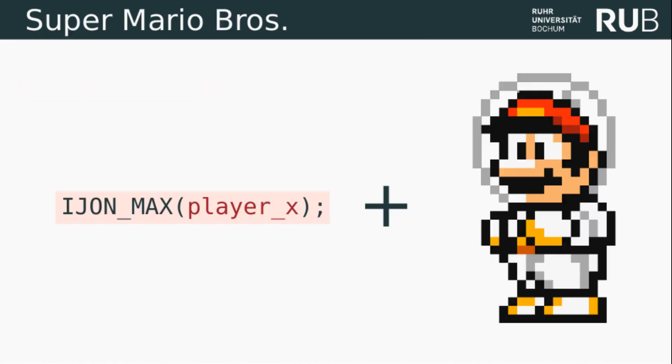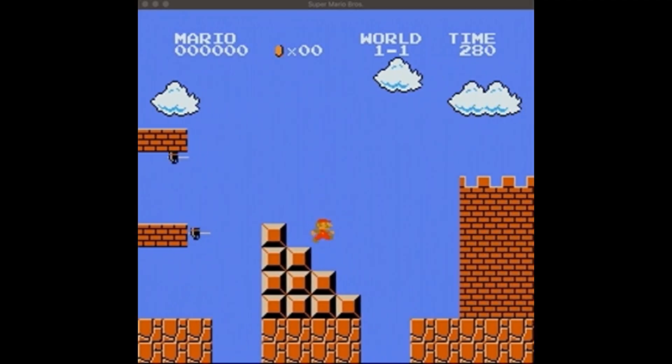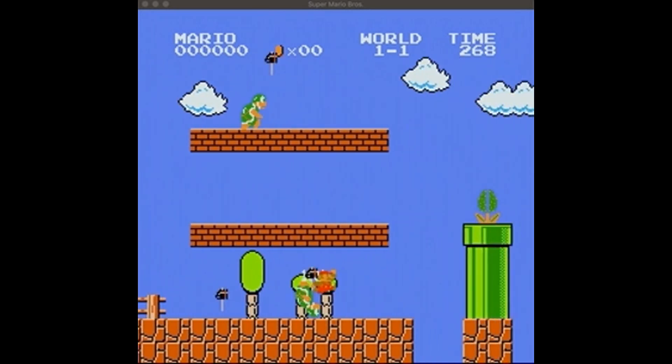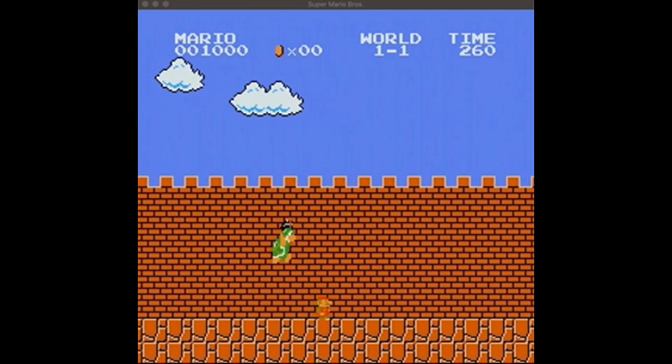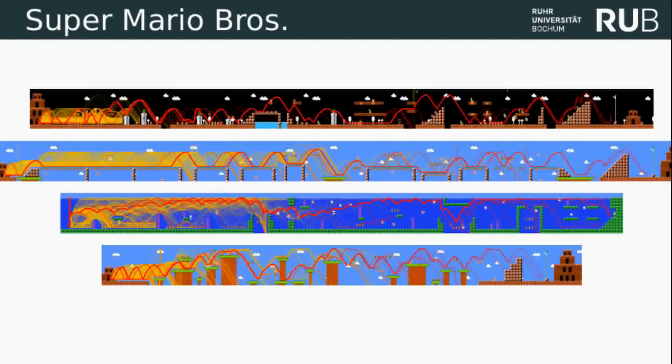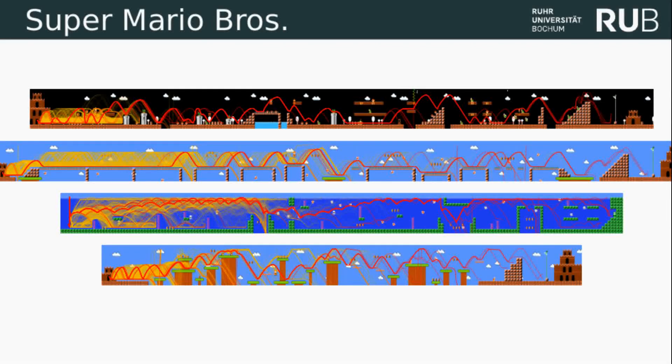To give a more visual example for this behavior, we combined the maximization feedback with Super Mario Bros. By adding a small annotation that states that we wish to maximize the player's x-coordinates, we turn AFL into a surprisingly competent Super Mario Bros. speedrunning bot. In these pictures, you can see AFL and AFL with that one-line annotation playing Super Mario Bros. in different levels. As you can see, using the annotation, AFL and IJON are able to finish the level.